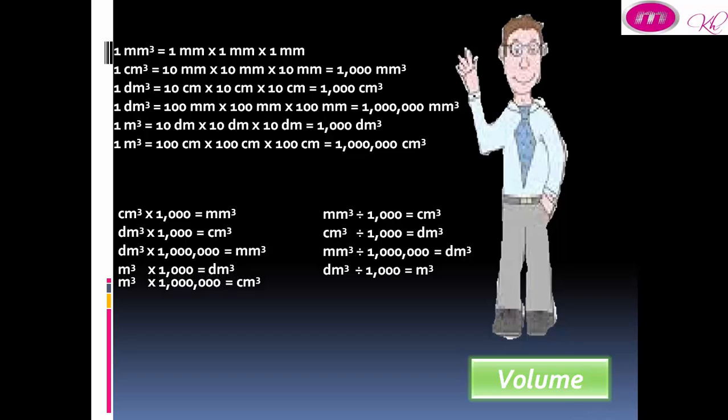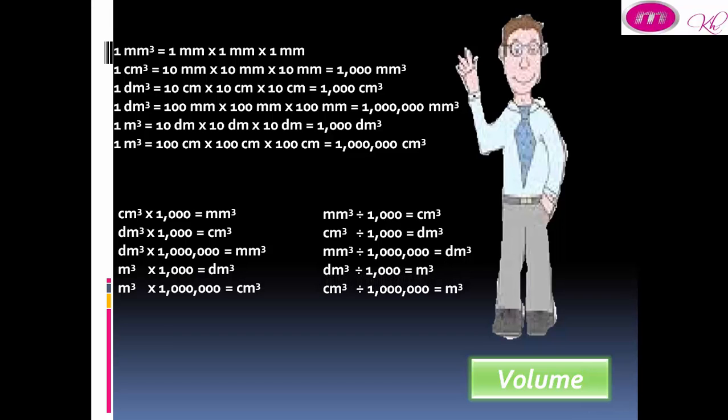When we change from centimeter cube to decimeter cube, we multiply by 1,000. When we change from centimeter cube to millimeter cube, we divide by 1,000,000.